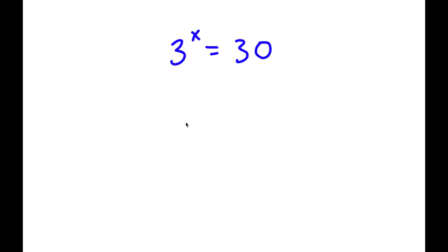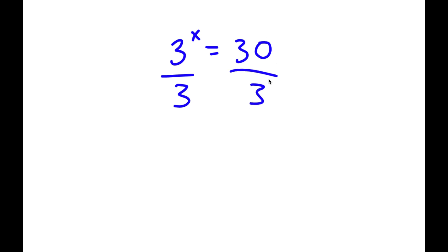In this problem, I have 3 to the power of x is equal to 30. To solve this, I'm going to first start by dividing both sides by 3. So now I have 3 to the power of x over 3 is equal to 30 divided by 3, which equals 10.